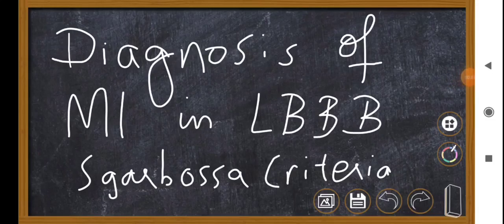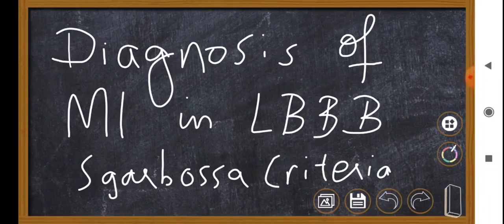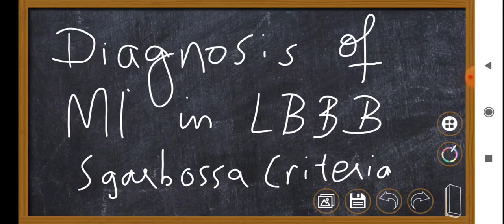In today's video I am going to discuss the diagnosis of myocardial infarction in the setting of left bundle branch block. A criteria is used to identify the MI or the STEMI equivalent in the setting of left bundle branch block, and it applies not only to left bundle branch block but also the right ventricular paced rhythm, in which there is a broadened QRS complex created due to ventricular pacing.